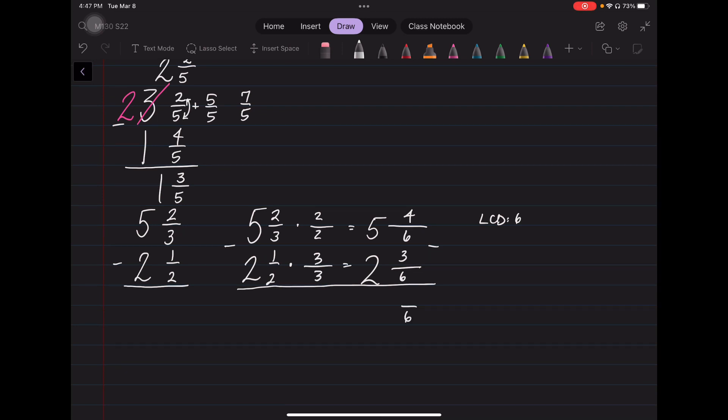I keep my denominator. 4 minus 3 is 1. 5 minus 2 is 3. And I'm good to go.